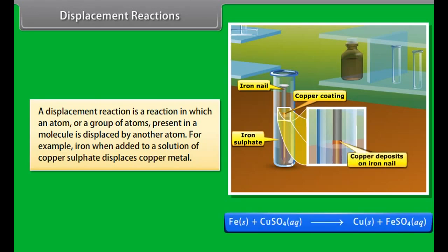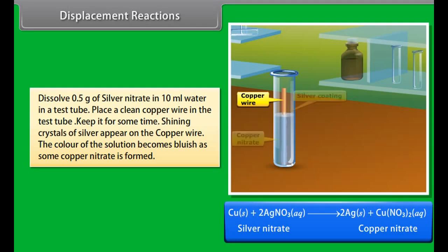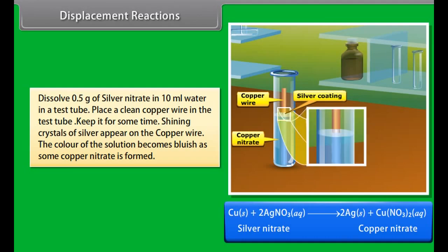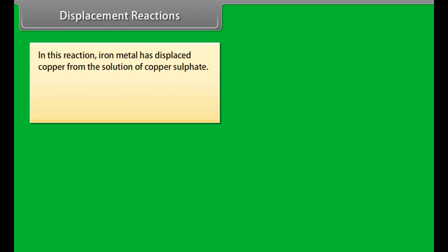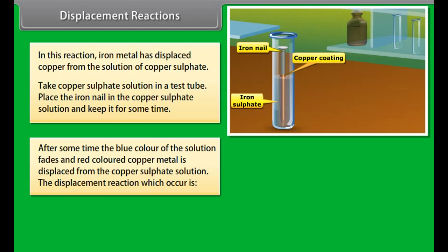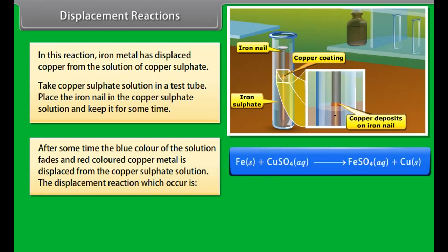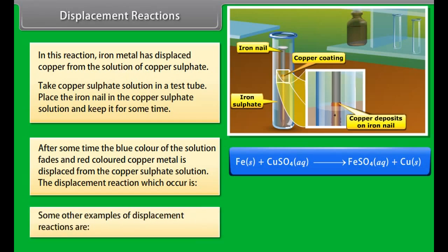Take 0.5 gram of zinc carbonate in a test tube, fit it with a cork and a delivery tube, and heat over the flame. A colorless gas is given out; on passing through lime water it turns it milky. Heating zinc carbonate decomposes it to carbon dioxide gas and zinc oxide. Also, heat about 1.0 gram of ferrous sulfate in a china dish — on strong heating the green color changes to brown and a pungent-smelling gas comes out, due to decomposition of ferrous sulfate into brown ferric oxide and pungent gases SO₂ and SO₃.